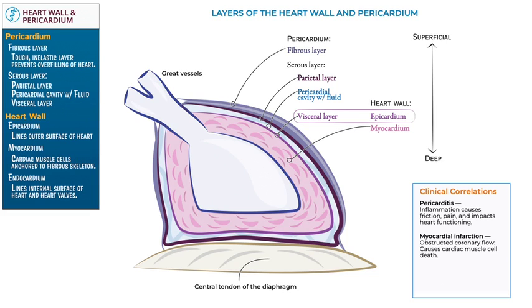Lastly, show that the endocardium forms the innermost layer of the heart wall. Endocarditis, inflammation of the endocardium, can destroy the heart valves and disrupt blood flow through the heart. This concludes our diagram.